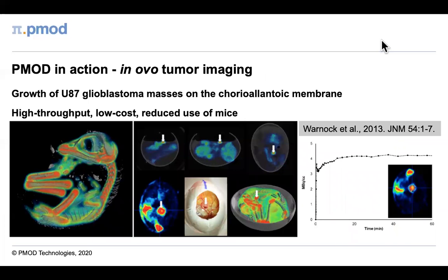PMOD has also been used in more exotic models. Here you can see images of chicken embryos and tumours still inside the egg. At the University of Liege in Belgium, the chorioallantoic membrane of the developing chicken embryo was used as a tumour model. On the left, a 3D rendering made in PMOD shows a validation study with sodium fluoride PET and contrast-enhanced CT. In the centre, FDG uptake is shown in a U87 glioblastoma grown inside the shell, and on the right, the kinetics of FDG in such a glioblastoma using dynamic imaging.